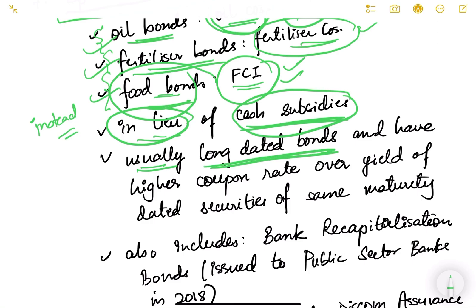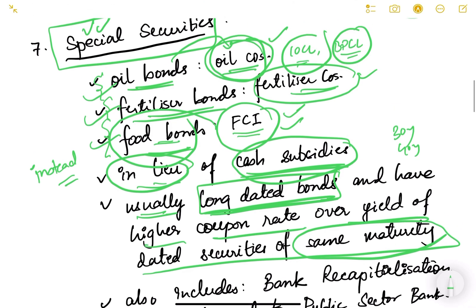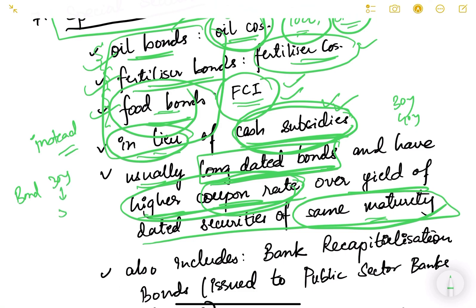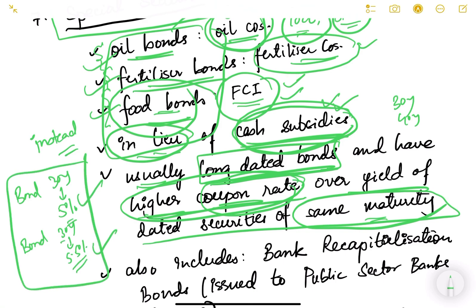These special securities are usually long-dated bonds with maturity of maybe 30 or 40 years. They have a higher coupon rate over the yield of dated securities of the same maturity. Obviously, companies are accepting these bonds instead of cash, so they want more yield. The government compensates them with a slightly higher coupon rate — for example, if a normal 30-year bond has a coupon of 5%, this special security might offer 5.5%.